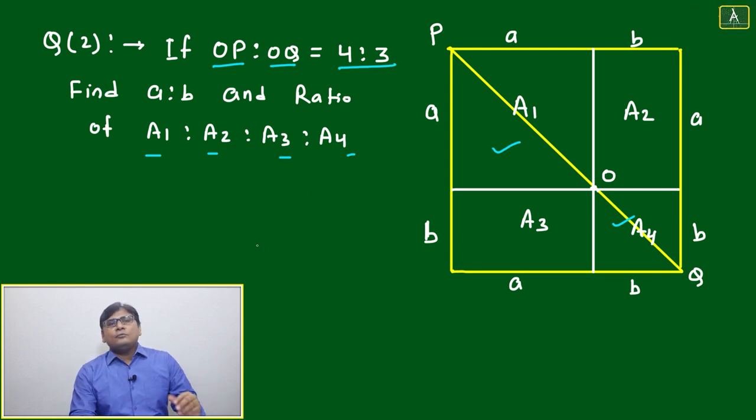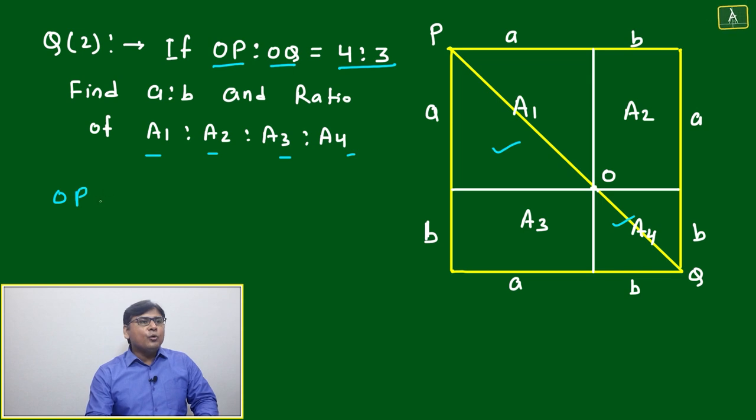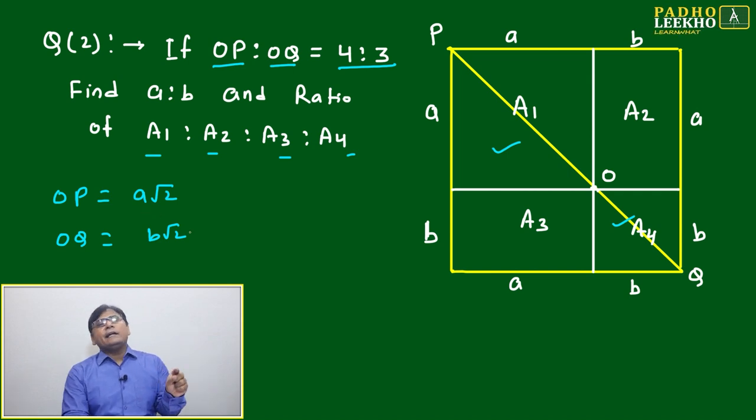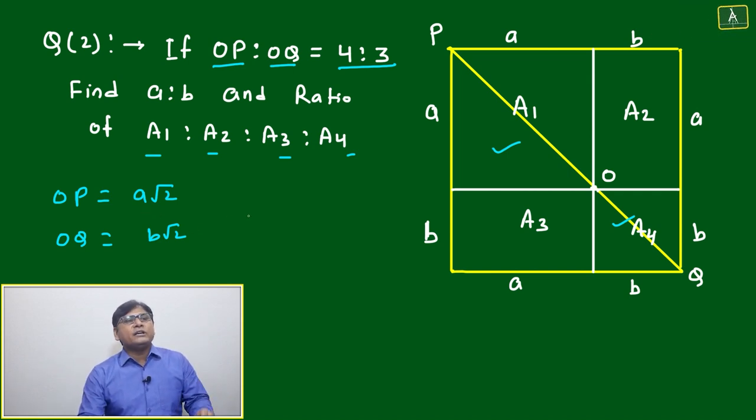If diagonal ratio is 4:3, then side ratio will also be the same because both are squares. Why? Because OP will be equal to a√2 and OQ will be equal to b√2. If OP:OQ is 4:3, then a√2 and b√2 ratio will also be the same.